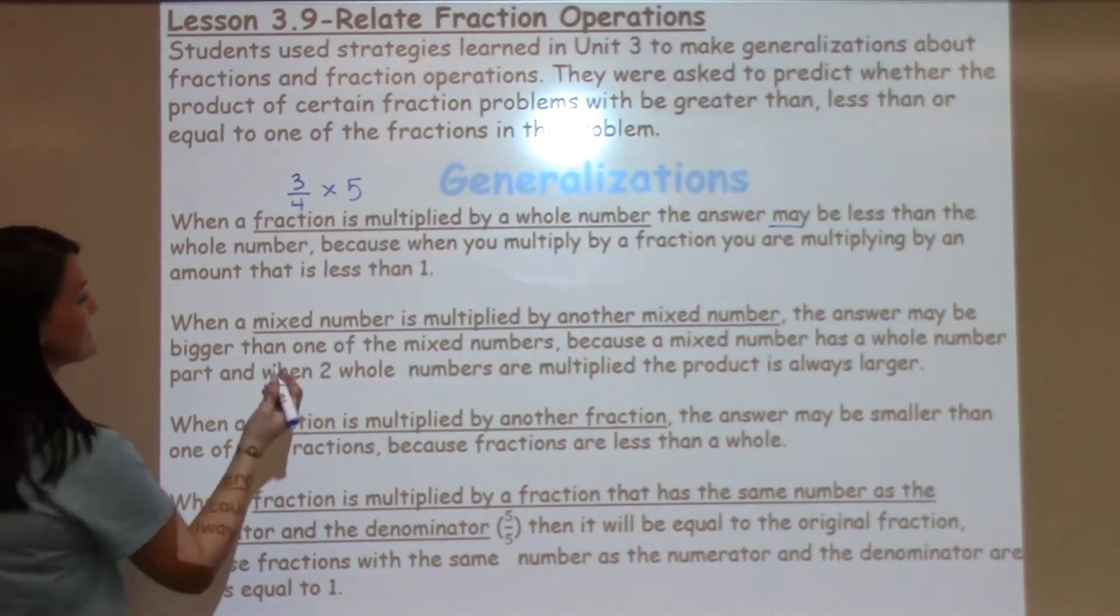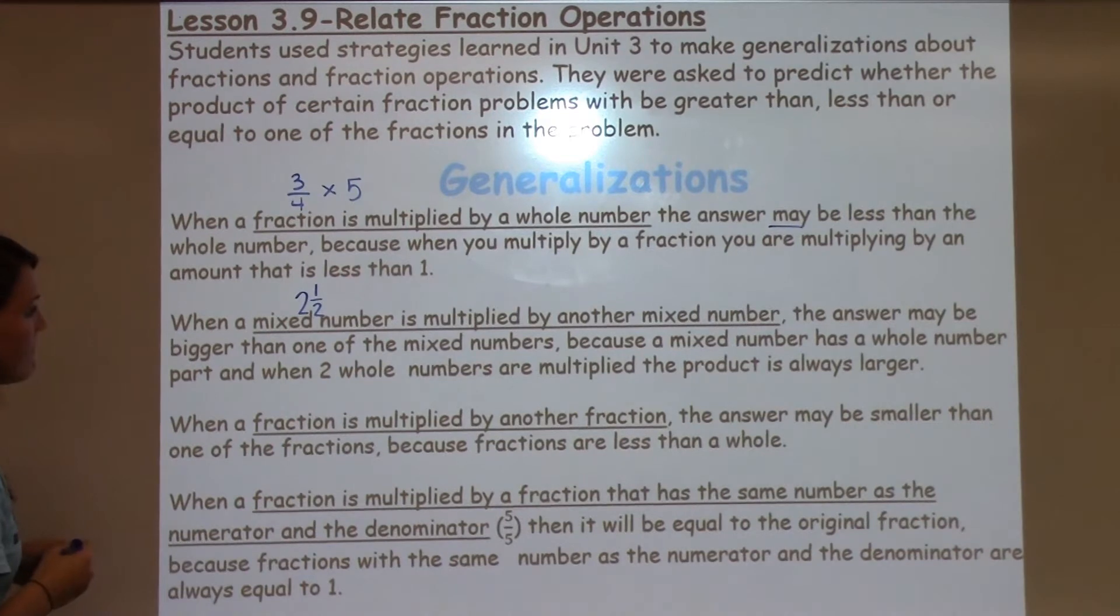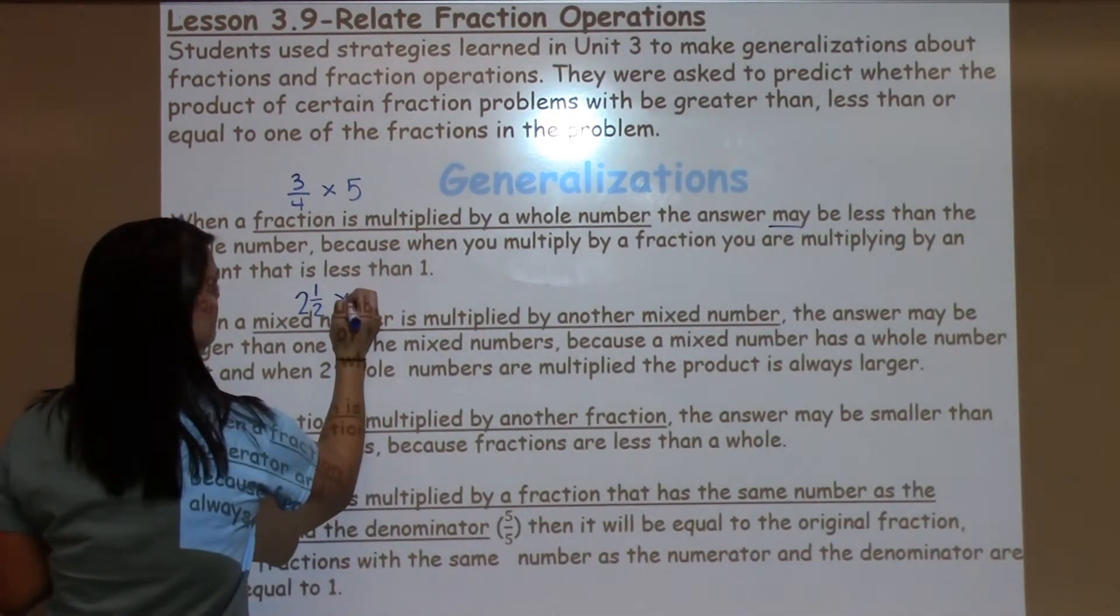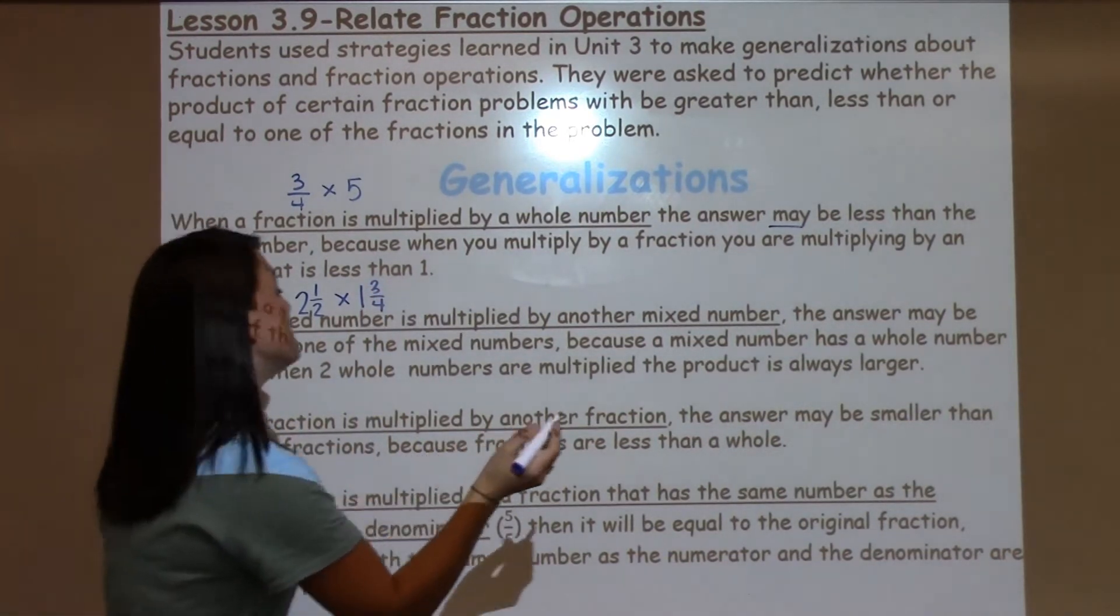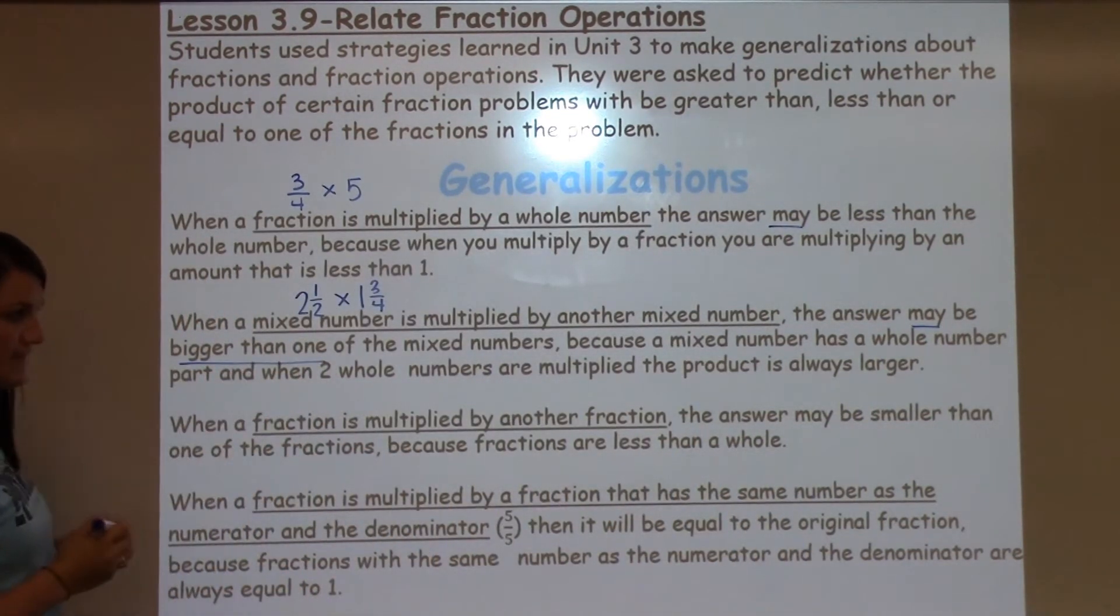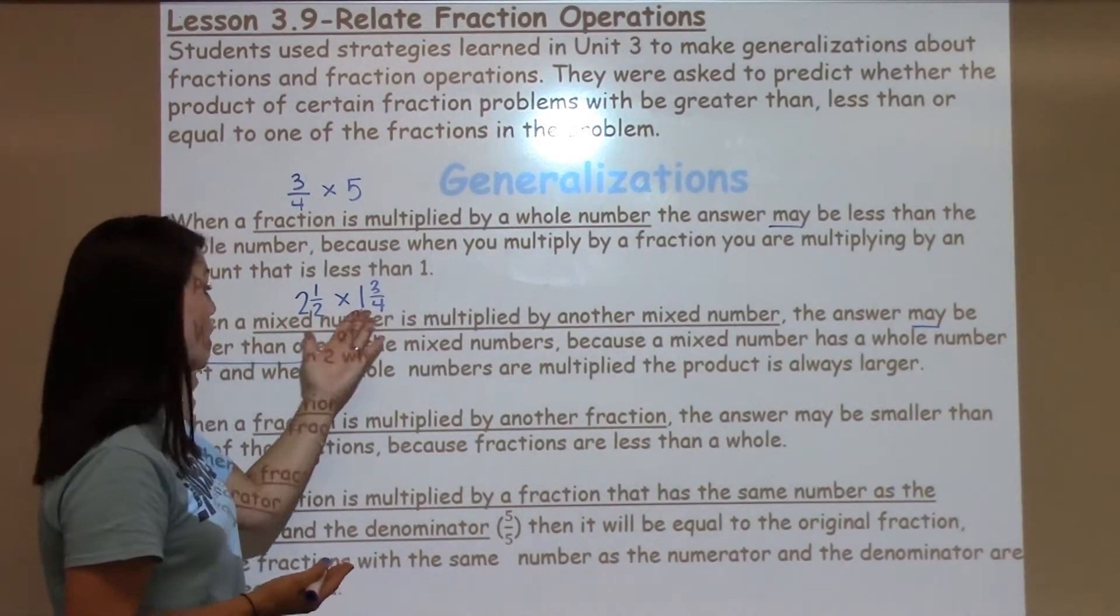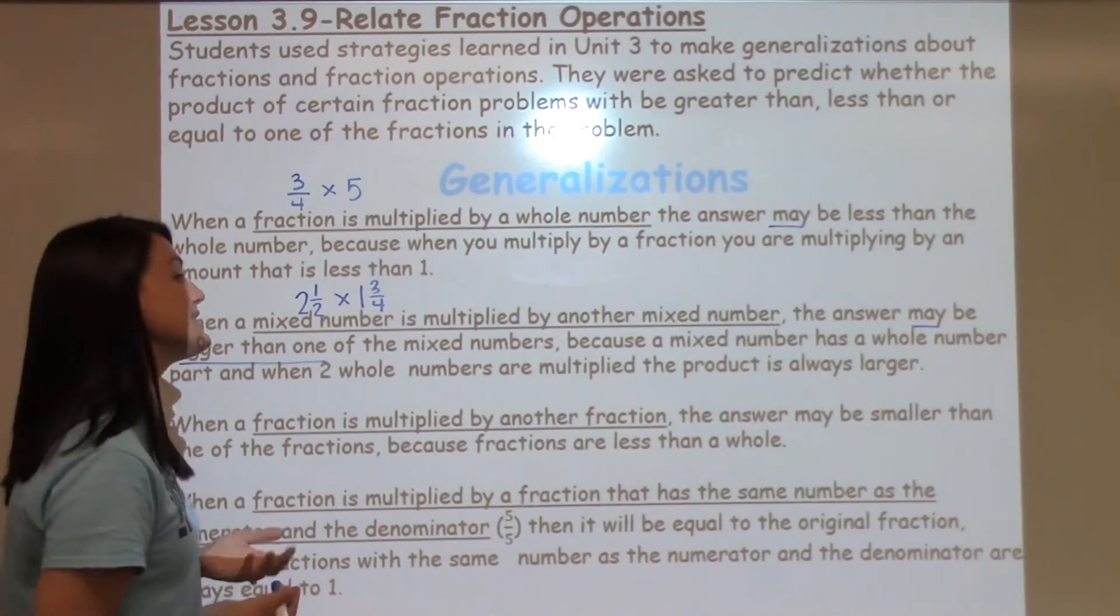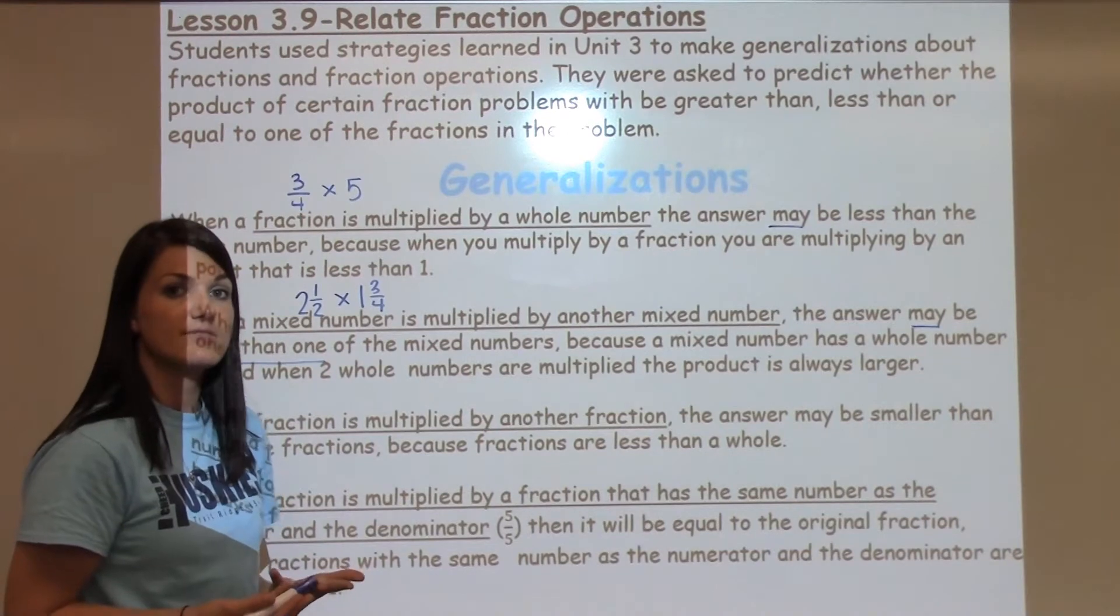The next one says, when a mixed number, remember a mixed number has a whole part and a fraction part, so we'll use 2 and 1 half. When a mixed number is multiplied by another mixed number, we'll use 1 and 3 fourths, the answer may be bigger than 1 of the mixed numbers. When we have 2 mixed numbers, we also have 2 whole numbers in front. So, most of the time, when you multiply with mixed numbers, the answer is going to be larger than 1 of those mixed numbers because of the whole number aspect.